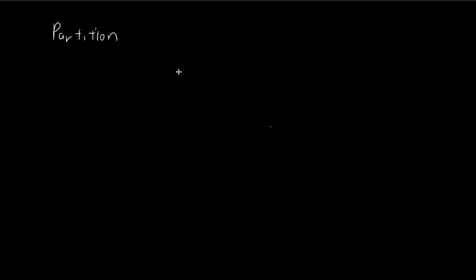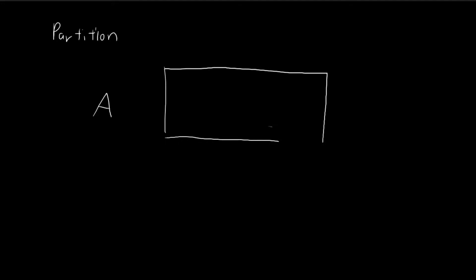In this video we're going to talk about how we can use equivalence classes to form partitions. A partition is just a way of carving up a set. Suppose we have a set called A, and let's represent this set using a rectangle. We can carve up this set into multiple regions, something like this.